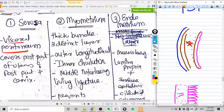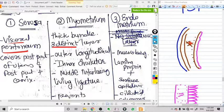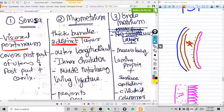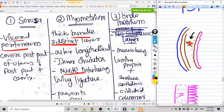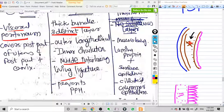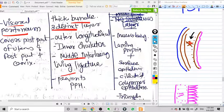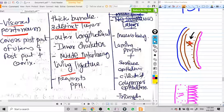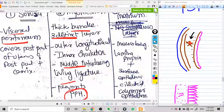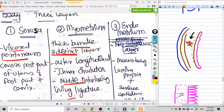If we divide the myometrium into three parts, we have three distinct bundles of layers: the outer longitudinal layer, the inner circular layer, and the middle interlacing layer. You can see here the middle interlacing layer acts as a living ligature because when they contract, they obliterate the arteries running into them, so it prevents PPH at stage three of labor.